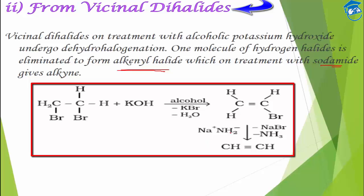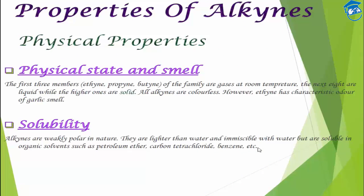We cannot use alcoholic KOH here because it is not basic enough to abstract the hydrogen. Instead, sodium amide (NaNH₂), which is highly basic, will abstract the hydrogen and push out the bromine atom to form the required product — acetylene.